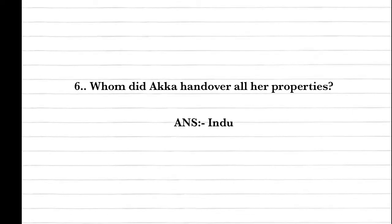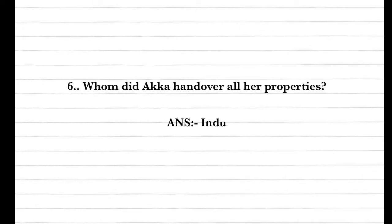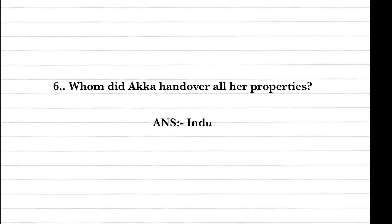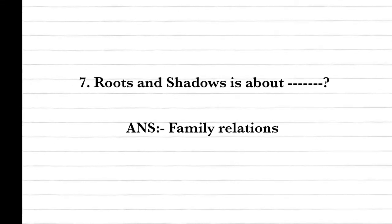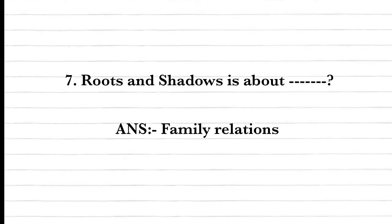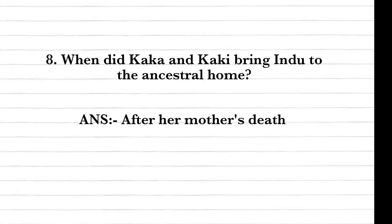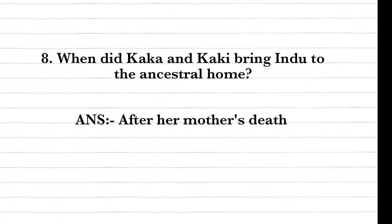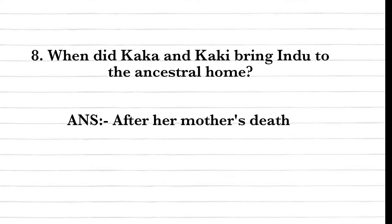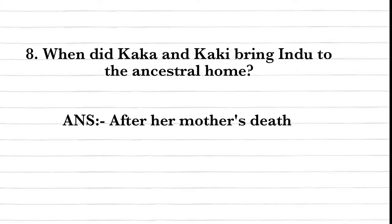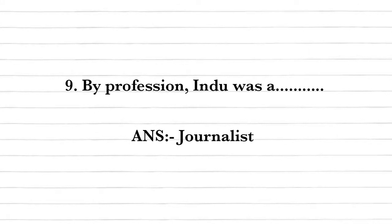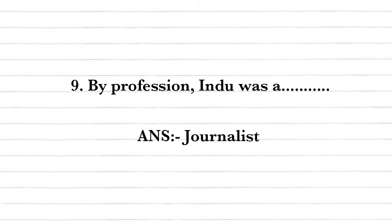Question six: Whom did Akka hand over all her properties? Answer: Hindu. Question seven: Roots and Shadows is about? Answer: Family relationships. Question eight: When did Kakka and Kakki bring Hindu to the ancestral home? Answer: After her mother's death. Question nine: By profession, Hindu was a? Answer: Journalist.